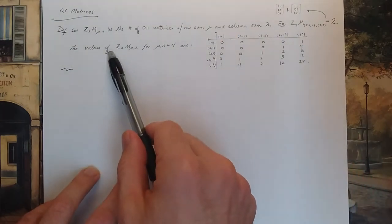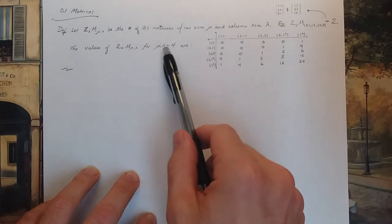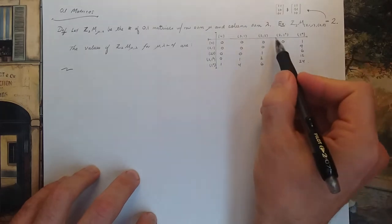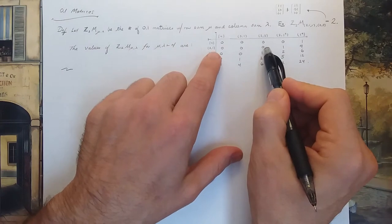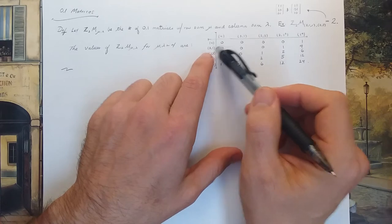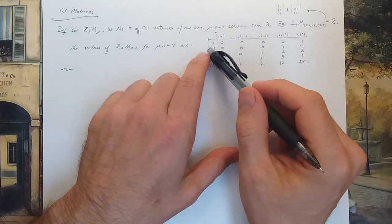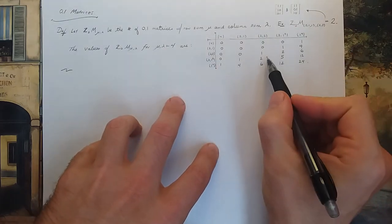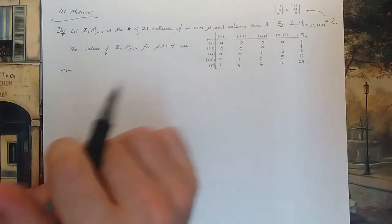In this table I've recorded the values of all possible numbers of 0,1 matrices for all integer partitions μ and λ of 4. There are a lot of zeros in this matrix — for example, the (3,1),(2,2) entry is 0 because there's no way to have a 0,1 matrix with row sum 3,1 and column sum 2,2; you only have two columns, so you don't have three places to put 1s. The entry shown here is 2, corresponding to those two matrices.